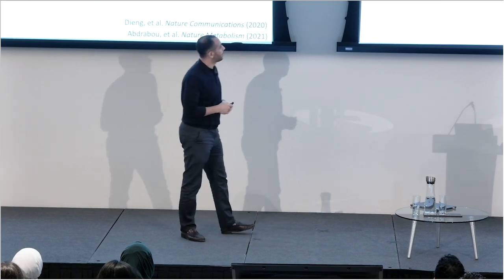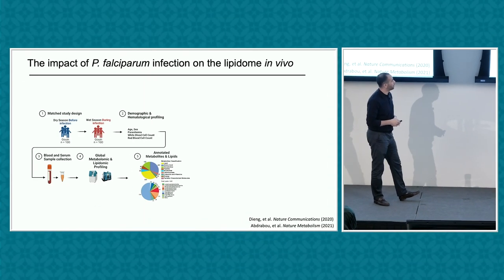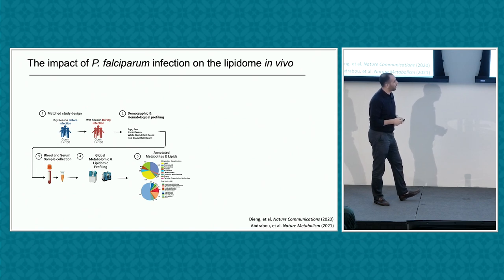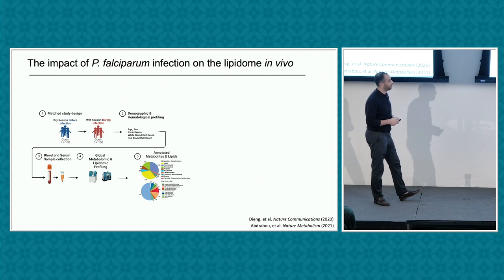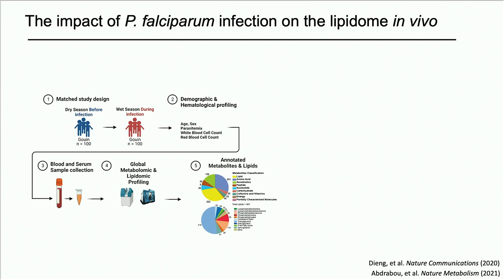We performed global metabolomic and lipidomic profiling. The outcome was about 700 metabolites detected — as you can see, one third of them are lipids, which is very intriguing. From the lipidomic profiling, we detected about 1,000 lipid molecules.